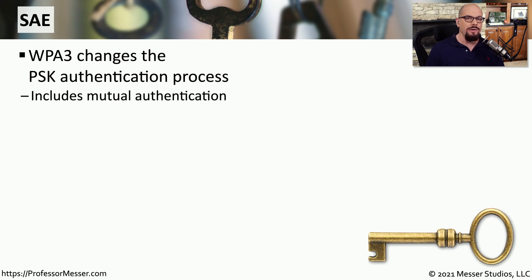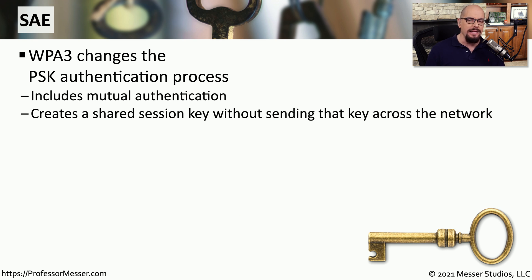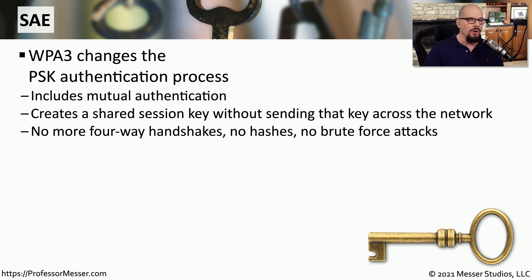With WPA3, the authentication process has changed to avoid this hashing problem. Additional security features include mutual authentication, so that not only are you authenticating to the access point, but the access point can also authenticate with you. The key exchange also changes — instead of sending a hash over the network, a shared session key is created without ever transmitting that key across the network. There is no more handshaking, no more hashes sent, and no one can gain access to a hash to perform a brute force attack.